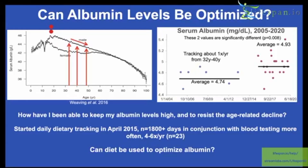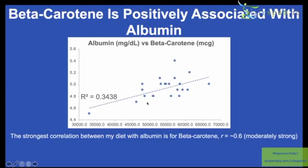One way I'm doing that is through diet. When looking at correlations between my diet and albumin, the strongest correlation is for beta carotene. I track my diet so I can look for correlations between dietary intake and biomarkers — in this case, albumin. The correlation for beta carotene with albumin is moderately strong, about 0.6. A correlation of 1 or negative 1 is a perfect linear correlation. I shoot for about 5, which corresponds to biological youth, and based on the plot, around 60,000 micrograms or 60 milligrams of beta carotene should get me there.